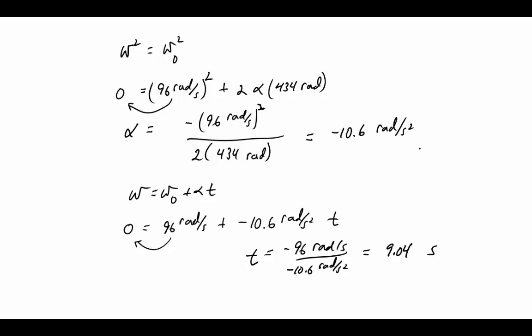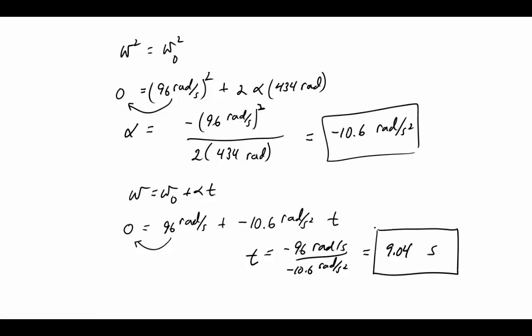That turns out to be 9.04 seconds. So the angular acceleration during the second half is negative 10.6 radians per second squared, and the time to slow down to a stop is 9.04 seconds.